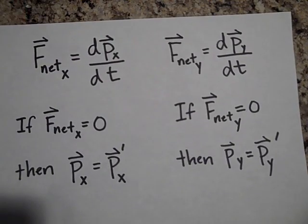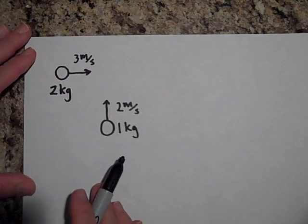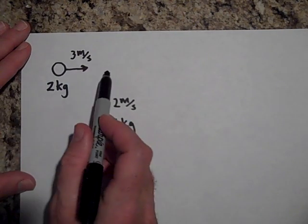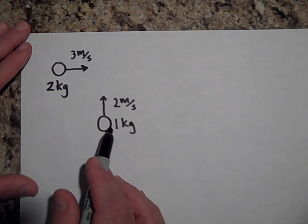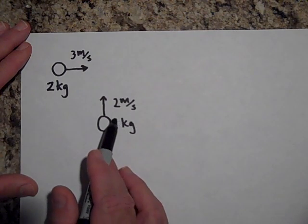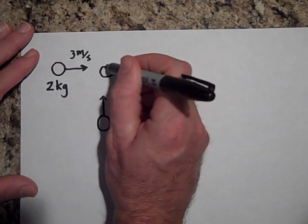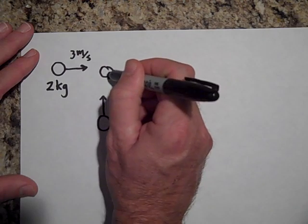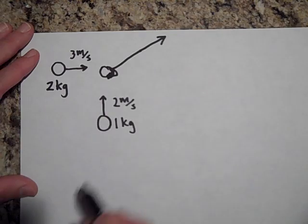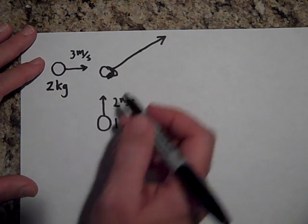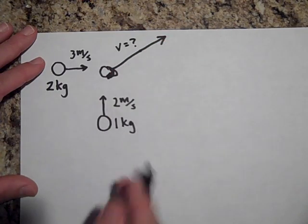Here's an example. A blob of clay going in the x-direction at three meters per second — it's two kilograms. Another blob of clay is one kilogram moving at two meters per second. They're going to collide, stick together into one big blob of clay heading out at some angle. We want to know what that final velocity is going to be.